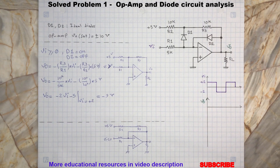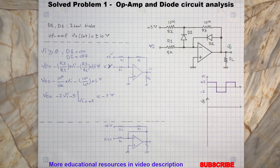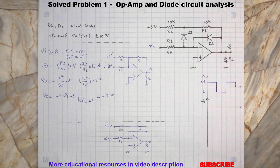Now we assume the input voltage Vi is less than zero. This will force D1 to turn off because of the reverse bias and push the op-amp output voltage to swing to its positive limit. This will turn on the diode D2 because of the forward bias and creates a direct loop from the output to the op-amp inverting terminal. Here is the simplified circuit for this condition.